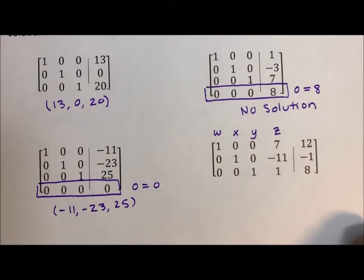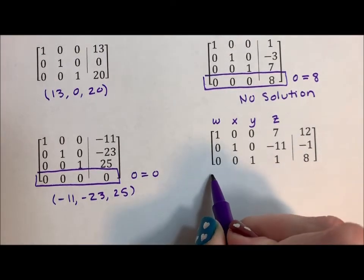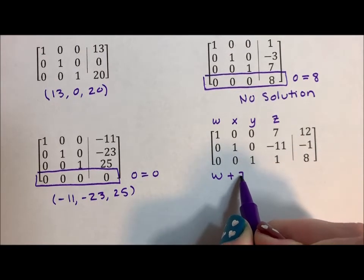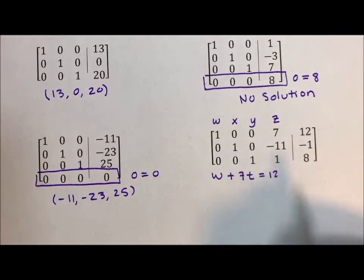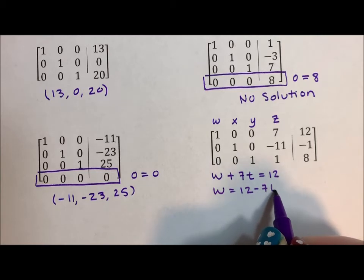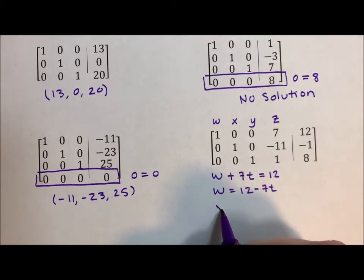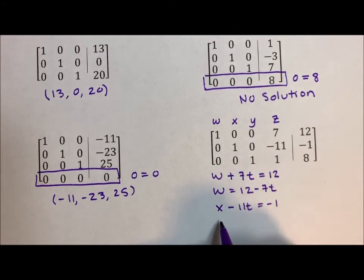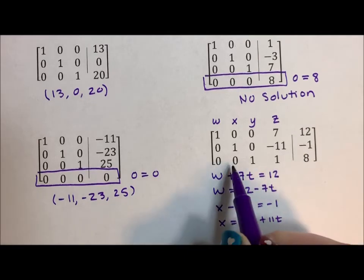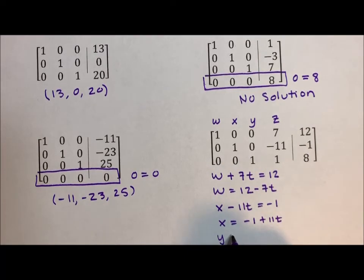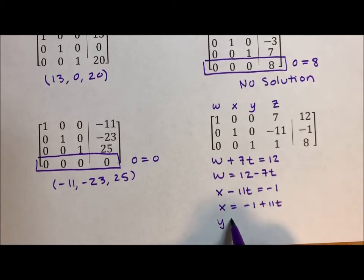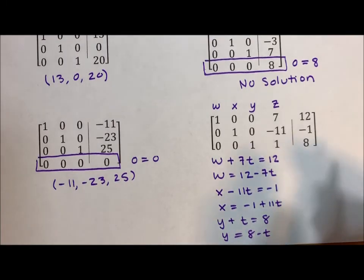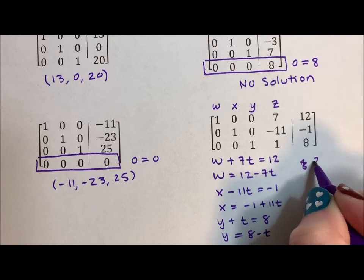What we are going to do is say W plus 7t equals 12, so W equals 12 minus 7t. X minus 11t equals negative 1, so X equals negative 1 plus 11t. Y plus t equals 8, so Y equals 8 minus t. And all of this is happening because we say Z is equal to t.